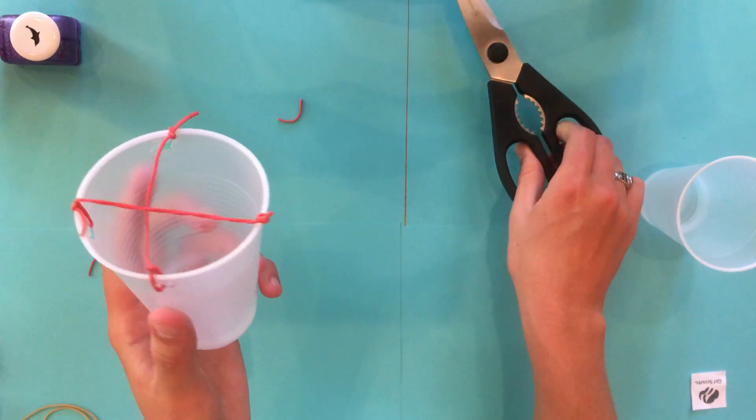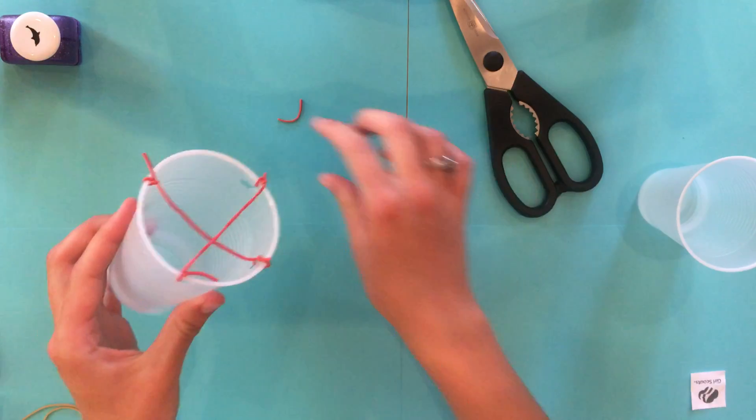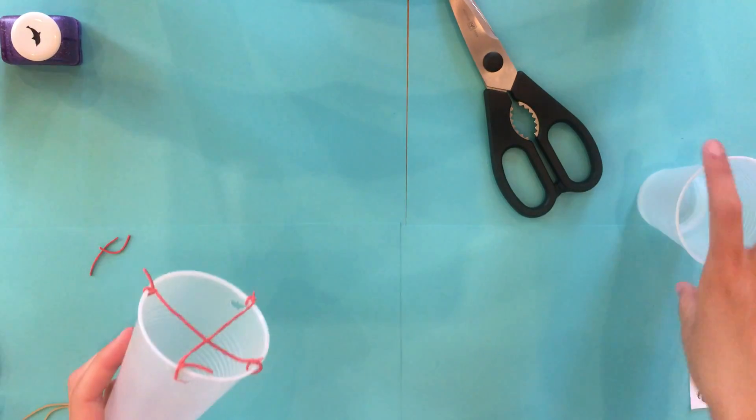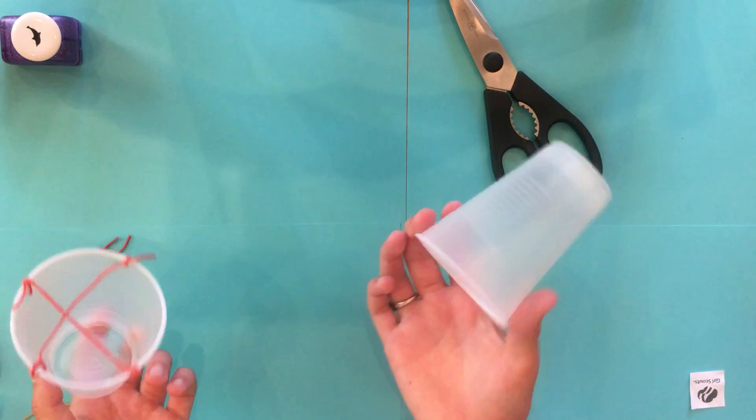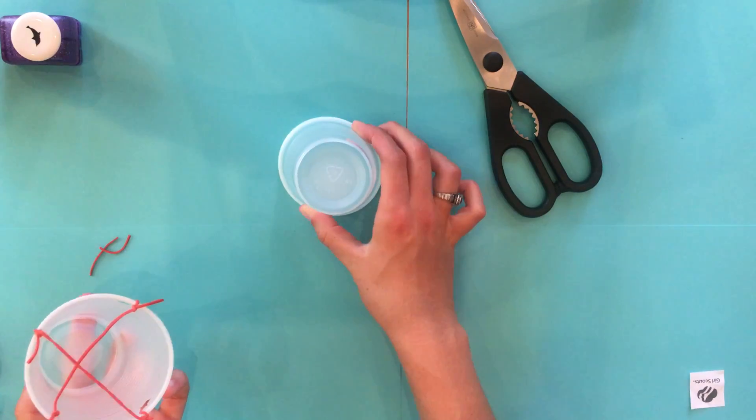If you want, you can decorate it. The one with the rubber bands on it is the cup you're going to see. Now I know you're thinking, well, why don't we punch holes in the other one? Well, this is mainly your base.